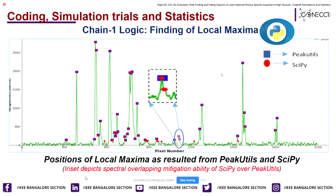In this slide, I am presenting the output of Chain 1 logic with respect to finding local maxima positions. We have performed simulations on different kinds of samples such as raw datasets, denoised datasets, and denoised baseline-corrected datasets. The plot shown is the LIBS emission spectrum of sample 1 from denoised and baseline-corrected datasets, where blue squares and red circles correspond to the local maxima positions obtained from peakutils and scipy respectively. We observed that the application of both libraries effectively found the local maxima.